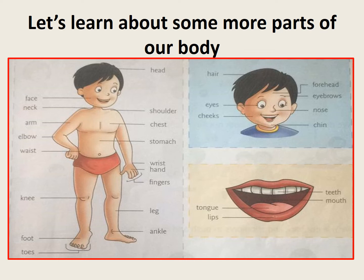We can see here forehead, eyes, eyebrows, cheeks, nose, and chin. The last picture shows different parts of our mouth. We can see within the mouth: teeth, tongue, and lips.